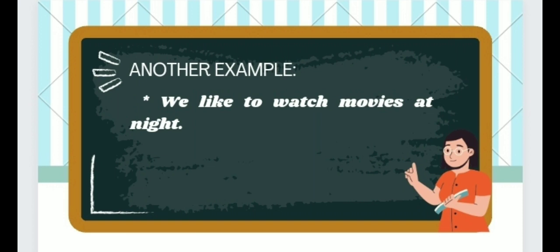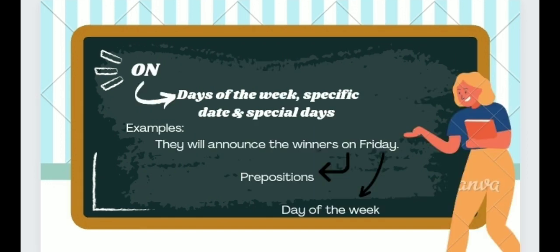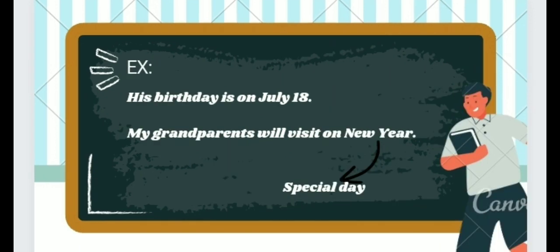'On' is used for the days of the week, specific dates, and special days. For example: 'They will announce the winners on Friday' — the preposition is 'on' and the day of the week is Friday. Another example: 'His birthday is on July 18' — the preposition is 'on' and the specific date is July 18.